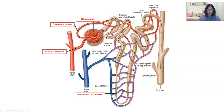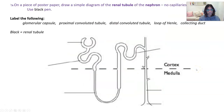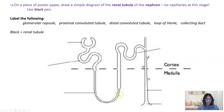The capillaries that wrap around the tubules are called the peritubular capillaries. There's lots of terminology there, so to help us understand this, get a piece of paper, pause the video, and draw this simple diagram. Once you've drawn the diagram, label the glomerular capsule, the proximal convoluted tubule, the distal convoluted tubule, the loop of Henle, and the collecting duct. Pause the video here and see if you can do that, and then once you've done, we'll go over the answers.